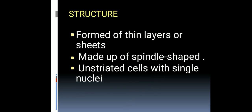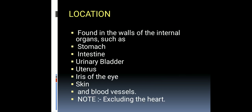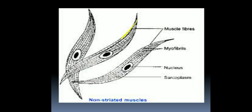What is its structure? It is formed of thin layers of sheets and the cells are spindle-shaped. The cells are uninucleated. It has myofibrils, which are actually the muscle fibers. Muscle fibers are the basic unit of the muscle cell. Myofibrils are also known as muscle fibers, and these muscle fibers are the basic unit of the muscle cell.